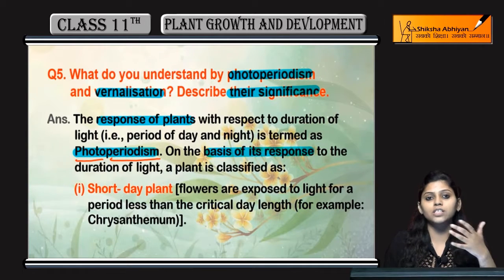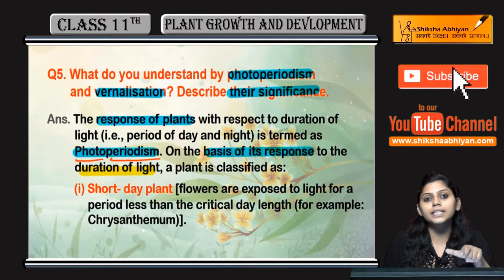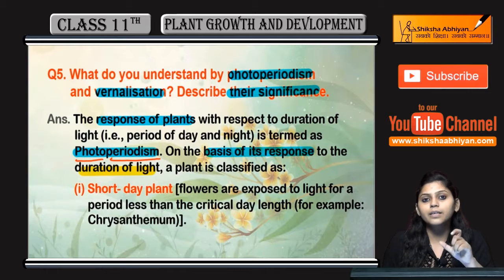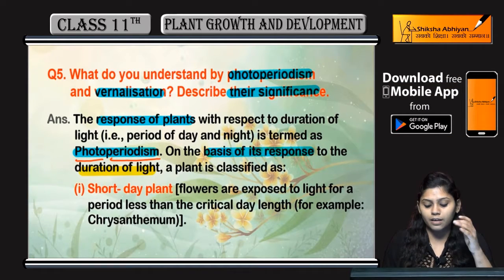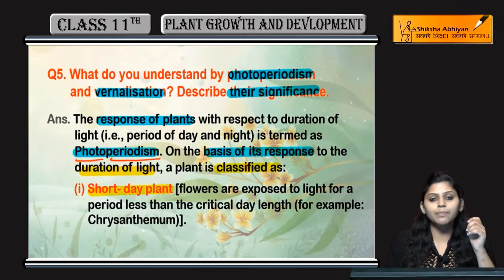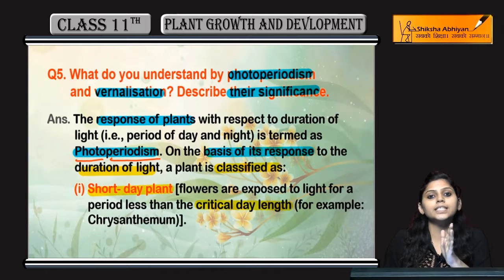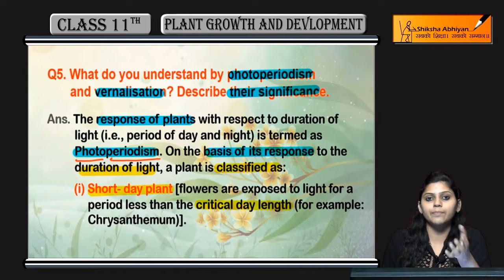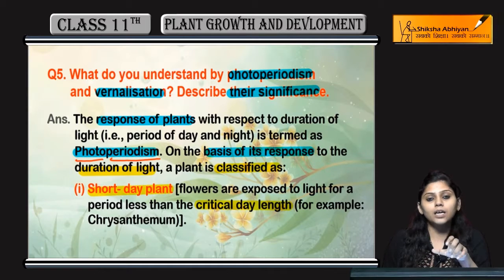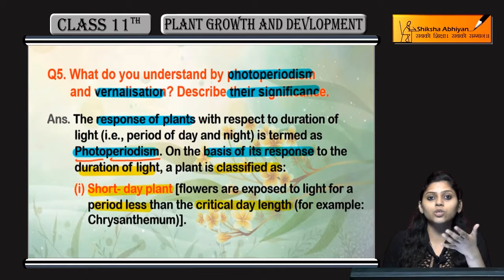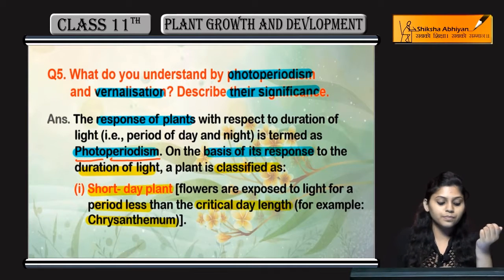On the basis of its response, if the duration of light is less than the critical day length required, then short day plants can grow. An example is chrysanthemum.